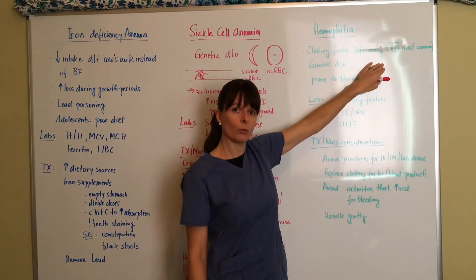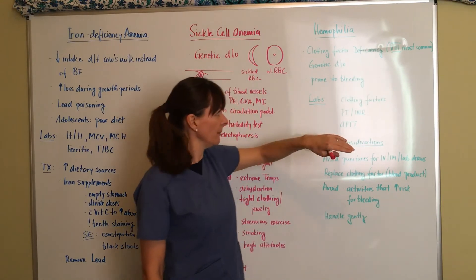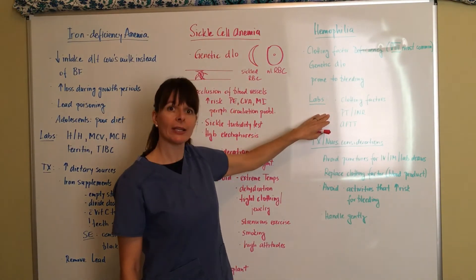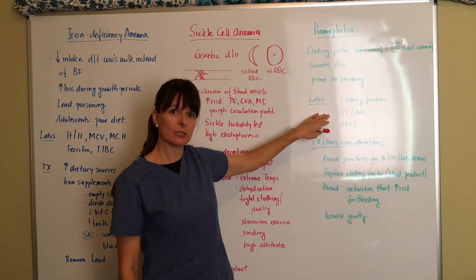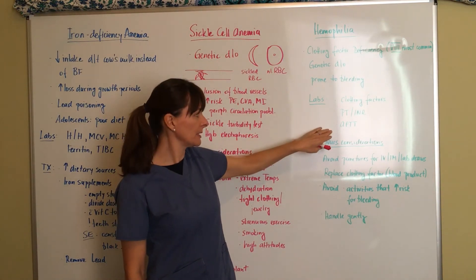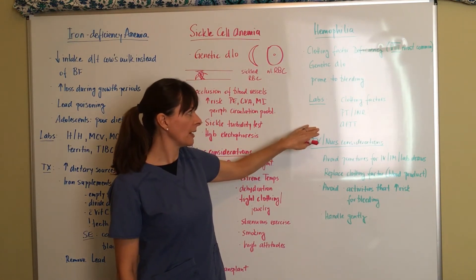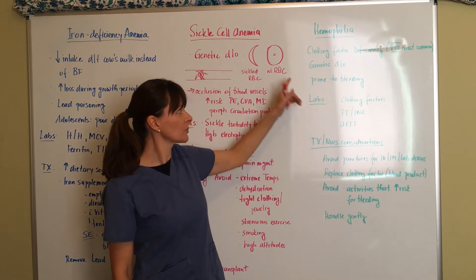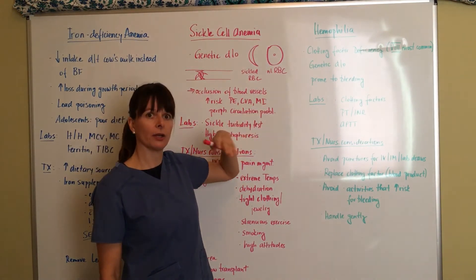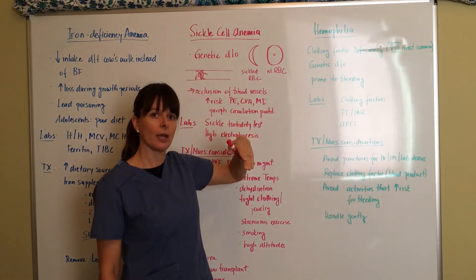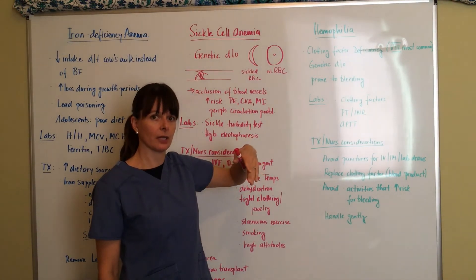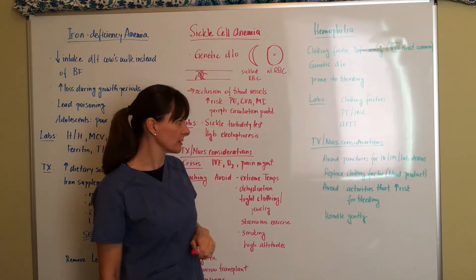For labs, we want to assess the clotting factors, which ones they have and how much of them. We want to check their coagulation times by checking their prothrombin time, APTT, and the INR to see how they're clotting and how that's going to play a role in them being able to stop bleeding if they're in a hemophilic crisis.